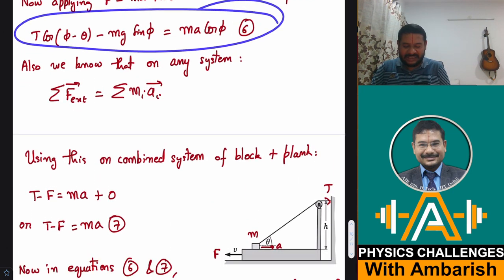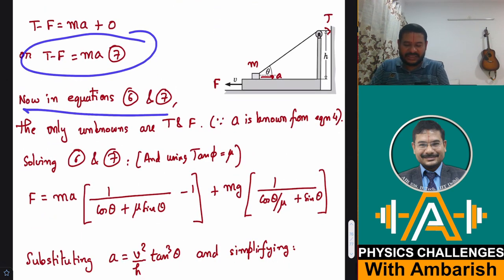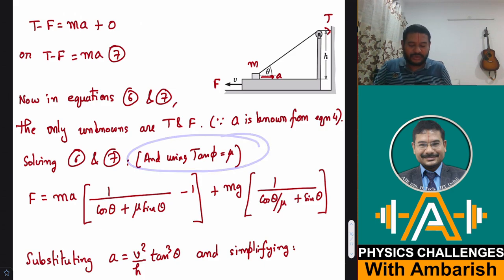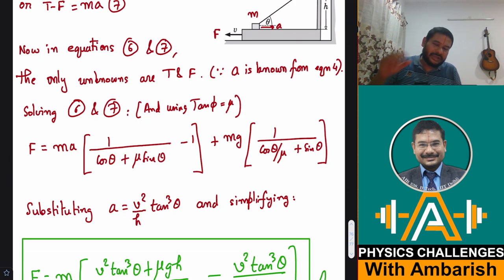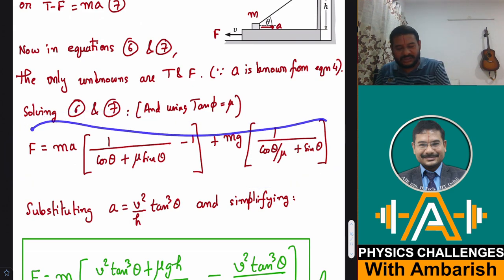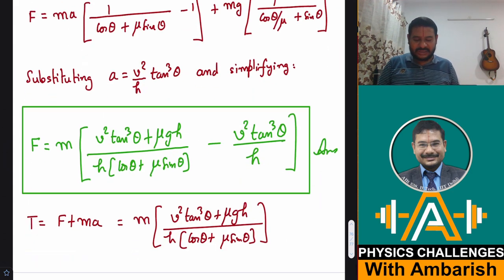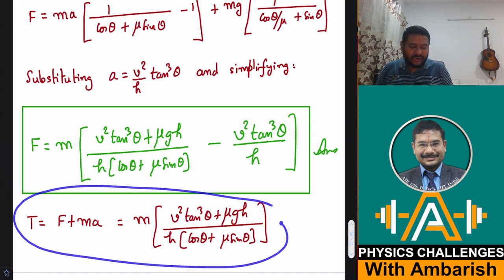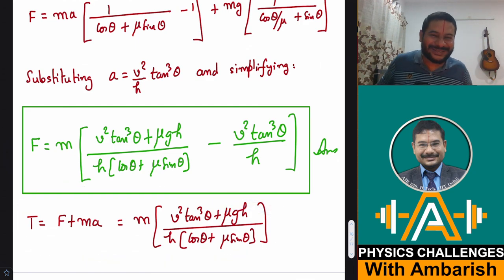Solving equations 6 and 7 simultaneously — the two unknowns are T and F, and A is already known from the constraint analysis. Using tan(phi) = mu wherever cos(phi)/sin(phi) = cot(phi) = 1/mu appears, and applying the cos(A − B) expansion, we obtain the final expression for the applied force F. Substituting the acceleration A = v²·tan³(theta)/H gives the complete final answer. The tension T is also noted for reference, though it was not explicitly asked.